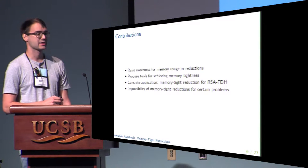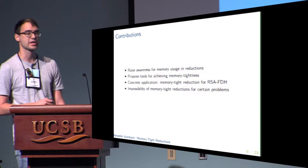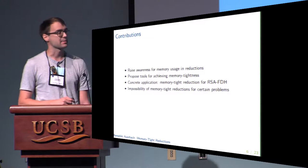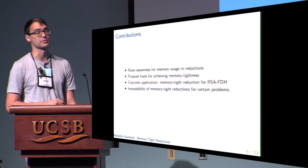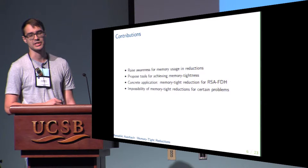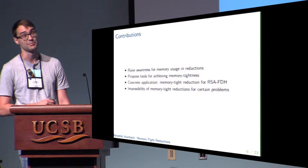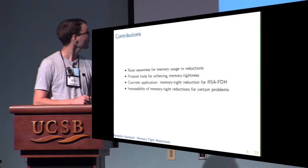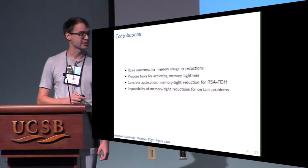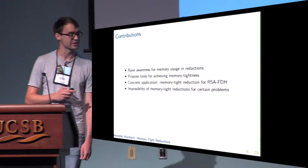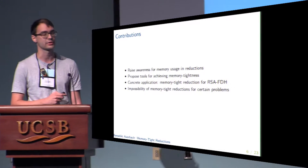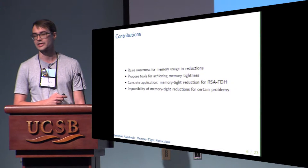We also investigate how to make reductions memory tight, meaning how to obtain reductions essentially preserving the same memory requirements as the algorithms we started with. We do this by giving a couple of tools which can be seen as memory-efficient replacements for typical non-memory-efficient steps in reductions. We use those in one concrete application, namely giving a memory-tight reduction for the RSA full domain hash signature scheme. Finally, we asked whether there exist reductions which cannot be both tight and memory tight, and found some evidence by proving lower bounds.